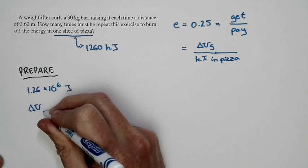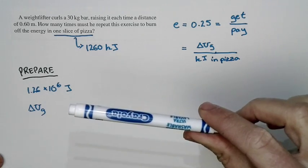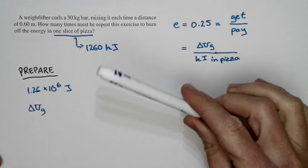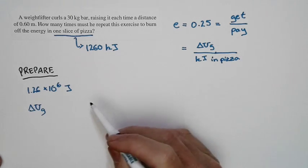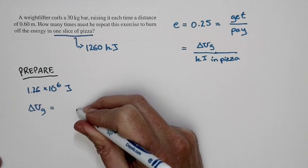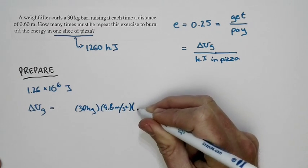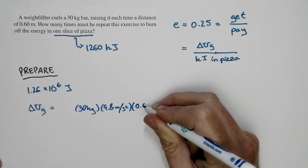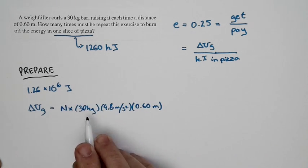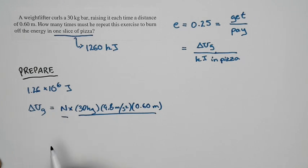What are we going to take as delta UG? You take the bar, raise it, then lower it back down — we're only going to consider the raising, because in principle you could raise it and just drop it. Even if you lower it, the energy expenditure for lowering is significantly less than for raising. So the change in potential energy of the bar is the mass (30 kilograms) times g (9.8 m/s²) times the height raised (0.60 meters) times N repetitions — that's the total change in potential energy.